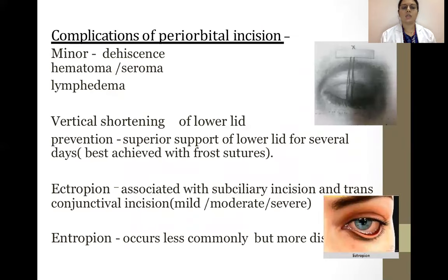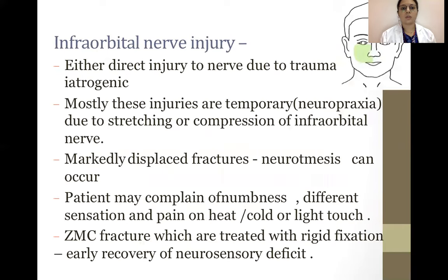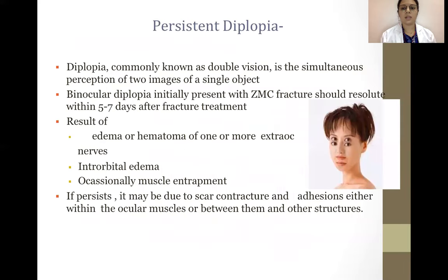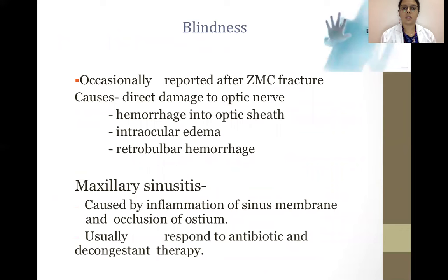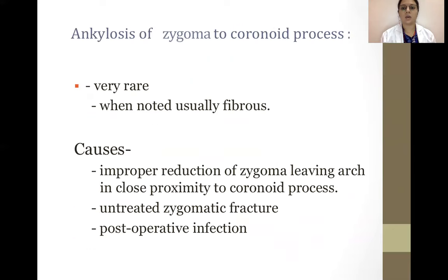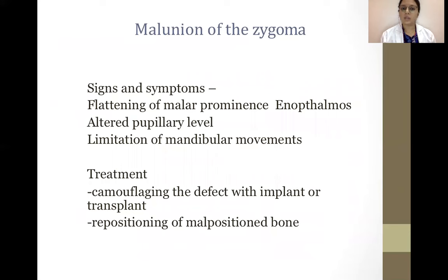Complications: minor complications include dehiscence, hematoma, seroma, lymphedema, and vertical shortening of the lower lid; prevention involves superior support of the lower lid for several days. Ectropion, entropion, and infraorbital nerve injury are also observed. Persistent diplopia, commonly known as double vision, is also seen. Enophthalmus is most commonly caused by increased volume of the orbit and is difficult to correct secondarily, though improvement is possible. Blindness is occasionally reported after ZMC fractures. Maxillary sinusitis is caused by inflammation of the sinus membrane and occlusion of the ostium. Ankylosis of the zygoma to the coronoid process and malunion of the zygoma are also listed complications.